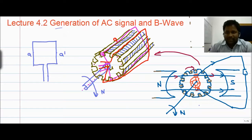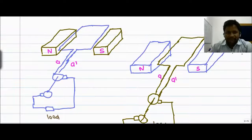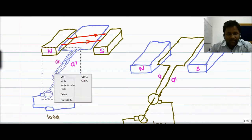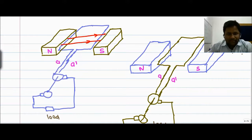The armature winding is placed in a constant magnetic field. Here we can see the constant magnetic field where flux is moving from north to south, and the rectangular coil having two conductors A and A dash is placed in this constant magnetic field. This winding is connected to slip rings at each end.